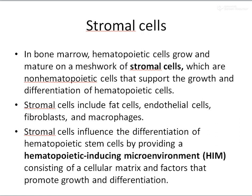In the bone marrow, the hematopoietic stem cells grow on a meshwork of stromal cells, which are non-hematopoietic cells that support the growth and differentiation of these hematopoietic cells. The stromal cells include fat cells, endothelial cells, fibroblasts, and macrophages.